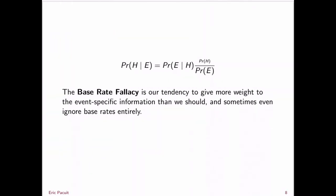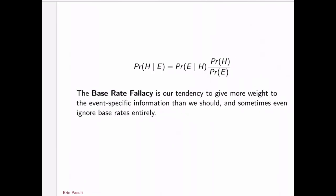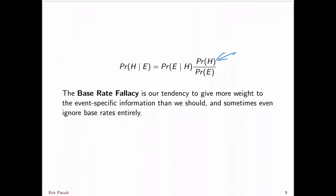So this is the base rate fallacy. The base rate fallacy is the tendency of people to discount the prior probability of your hypothesis. You're given some evidence — some testimony or a report from an expert — and you want to know the probability of H given this new evidence. Using Bayes' theorem, we know it's the likelihood of the evidence given the hypothesis times the prior probability of H. People tend to give more weight to event-specific information, namely the likelihood, than they should, and sometimes simply ignore the base rate. So the lesson is: don't ignore the base rate — it's crucial to understanding how you should update your probabilities in response to evidence.